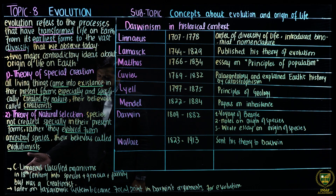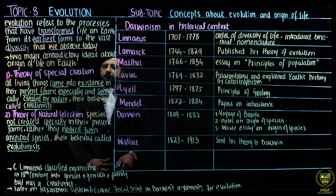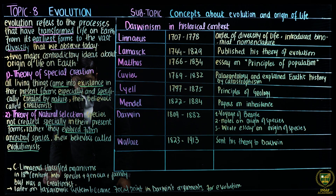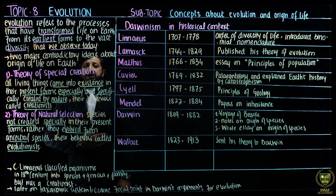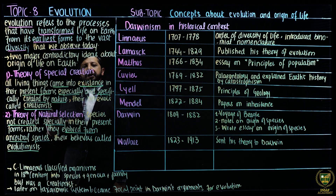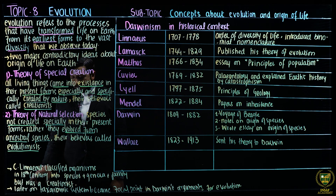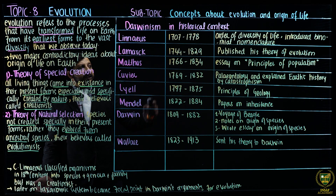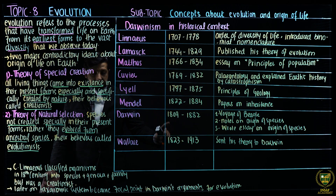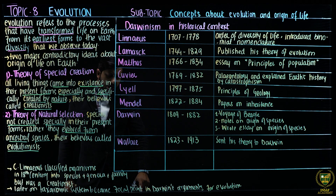Carolus Linnaeus classified organisms in the 18th century into species, genera, families, and so on. He was a theologian who believed that species were created in their genuine present forms and had never evolved — he was a strong creationist. However, Darwin was in the 19th century, and later on, Linnaeus's taxonomic system became the focal point in Darwin's arguments for evolution.